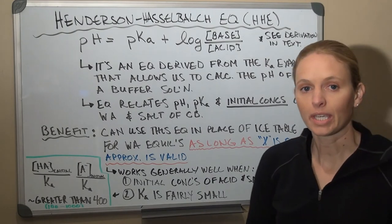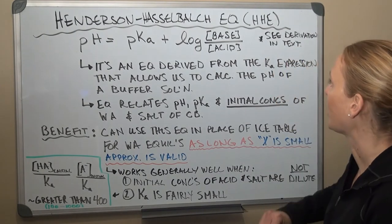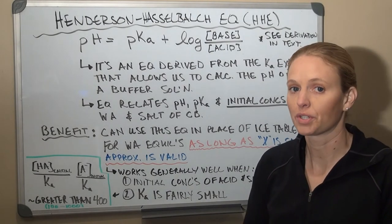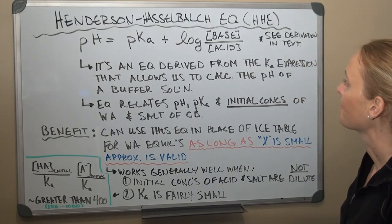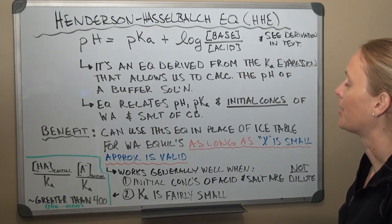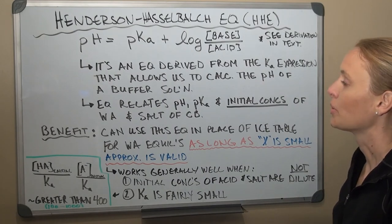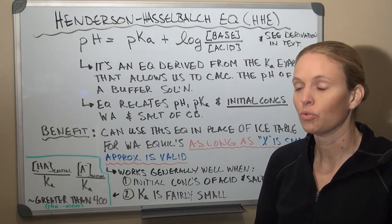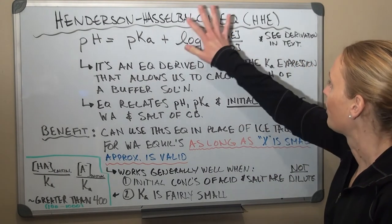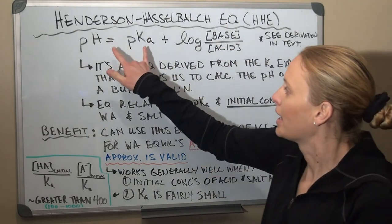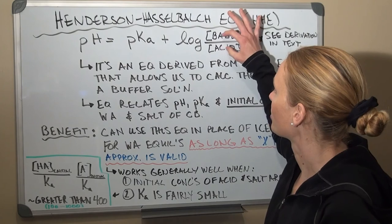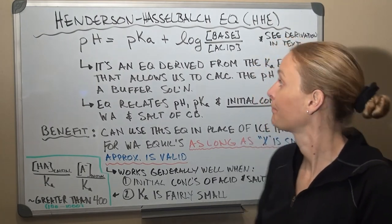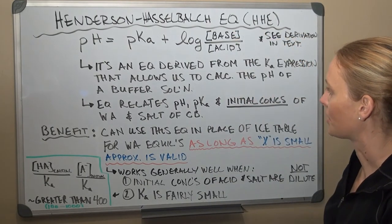In the buffer we have a weak acid and its conjugate base. The derivation for this equation is outlined in your textbook if you want more details. We're going to spend the next several minutes doing calculations using this equation, and over the course we'll also see what this log term really means and how varying concentrations affect the relationship between pKa and pH.